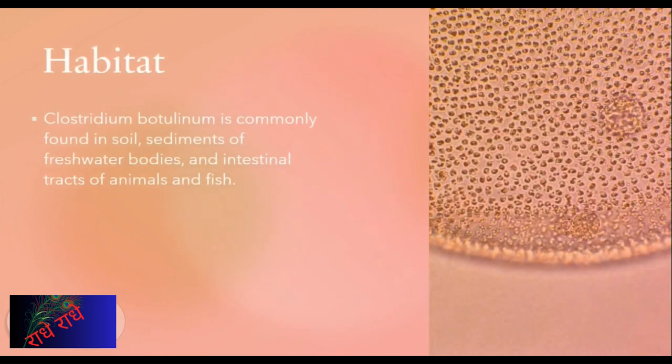Clostridium botulinum is found in soil, the sediments of freshwater bodies, and the intestinal tracts of animals and fish. As an anaerobic bacterium, it thrives in low-oxygen environments, allowing it to contaminate food products with its toxin, resulting in a very serious foodborne illness.